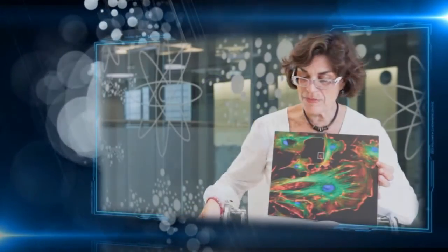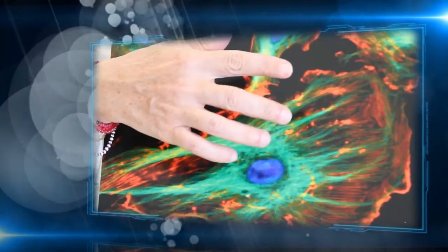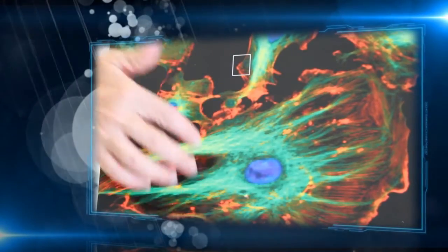This is an image of a mammalian cell taken with an optical microscope, and as you can see here, there are many different colors in a very nice picture.